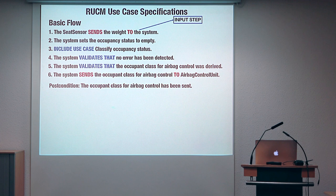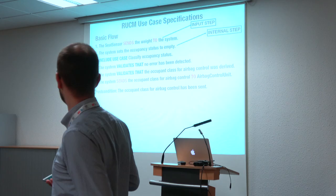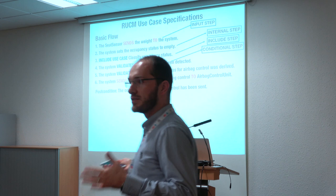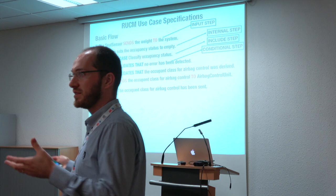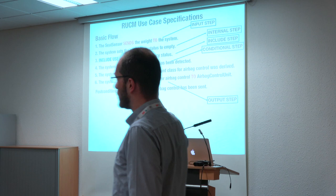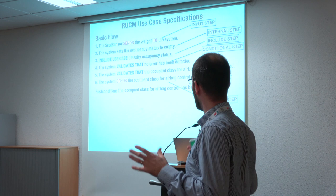When we have the keyword 'sends to', it indicates that we have an input step. If we have a sentence without keywords, it describes an internal behavior of the system — what the system is going to do at a certain point of execution. We also have the inclusion of another use case. Then we have the keyword 'validates that', which is used to indicate that there is some condition being checked by the system. Then the output is indicated by the system sending something to another actor. You can see that these keywords are not so many, but enable us to understand what's going on at a high level.